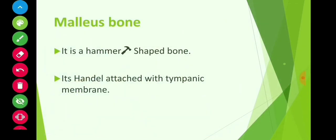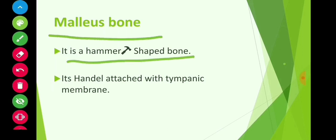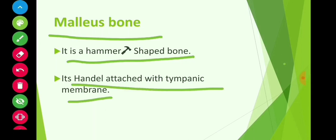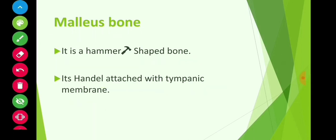What is the malleus bone? The malleus bone is a hammer-shaped bone. Its handle is tightly attached to the tympanic membrane.